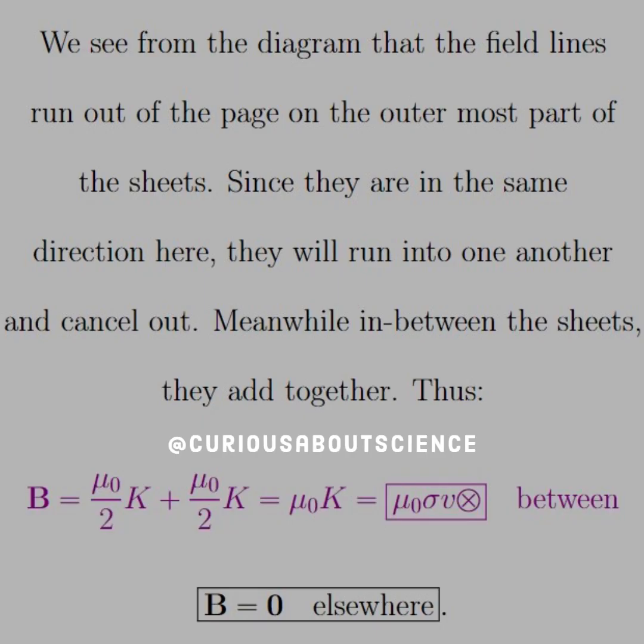So we see that from the diagram the field lines run out of the page on the outermost part of the sheets. They can't go anywhere else except merge down back into the middle, so anything outside of that, they just cancel out with one another.